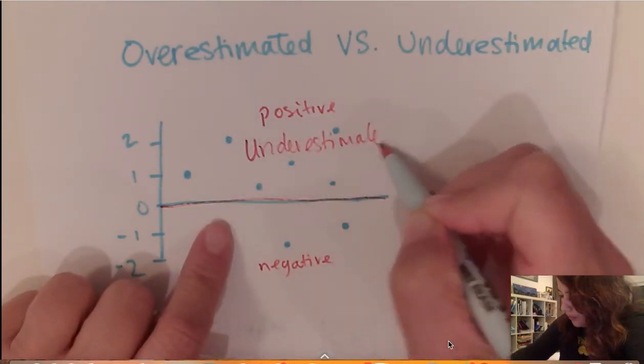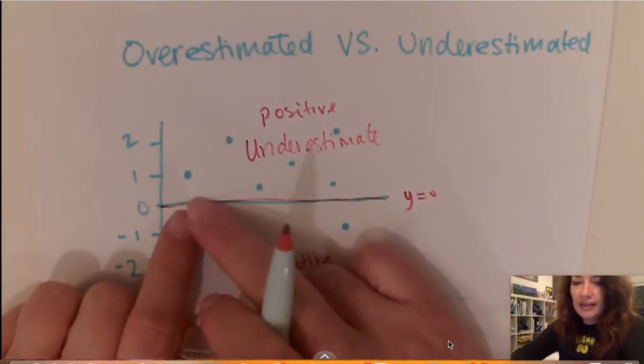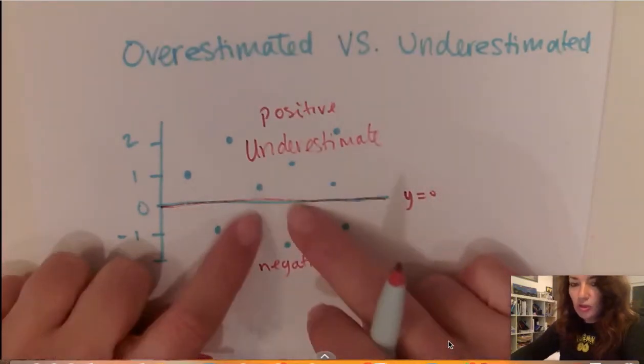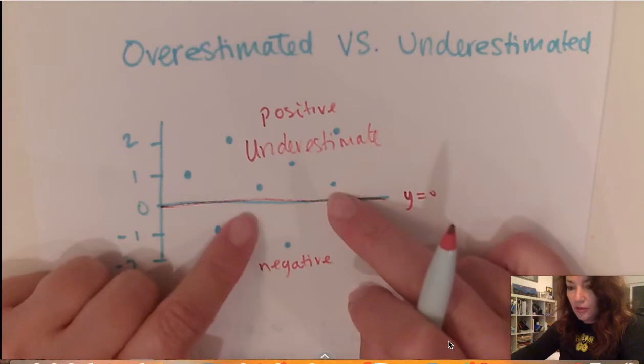In other words the data is here but we're saying that it should be or it is predicted that it is below. So you can see below means everything above was underestimated.